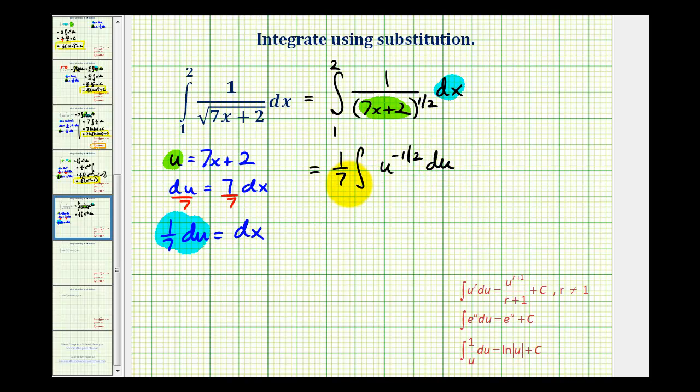And now we'll determine the anti-derivative of u to the negative one-half with respect to u. So we'll have one-seventh times u to the negative one-half plus one, that's going to be u to the one-half divided by one-half.